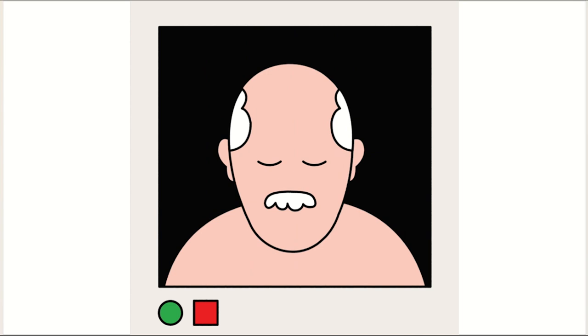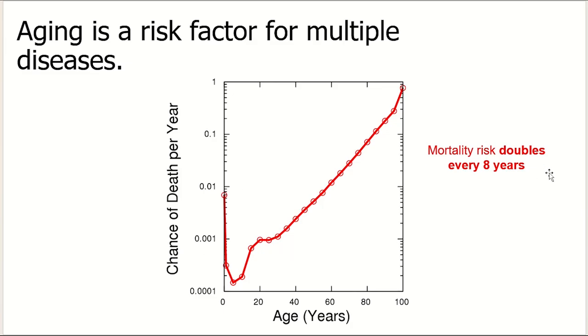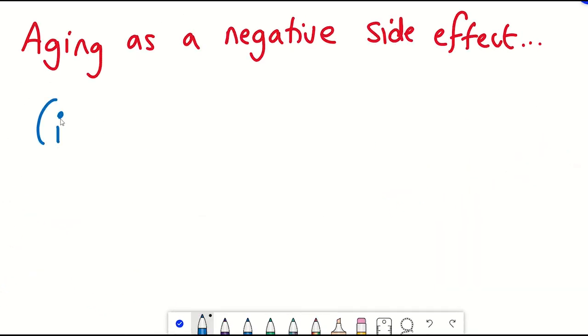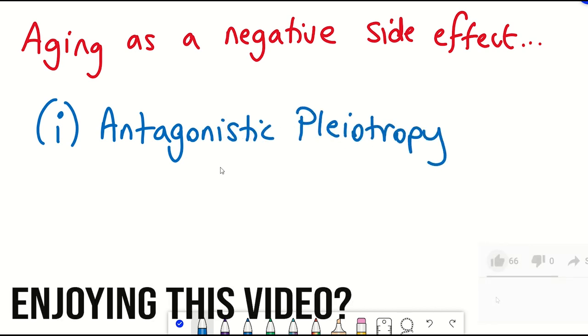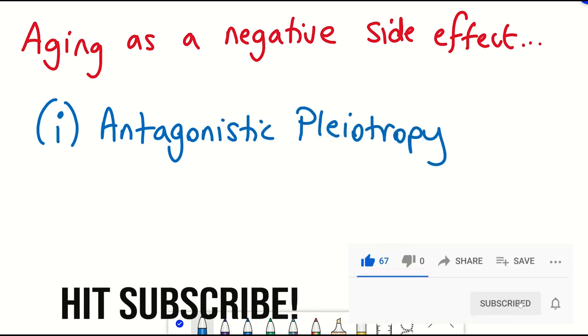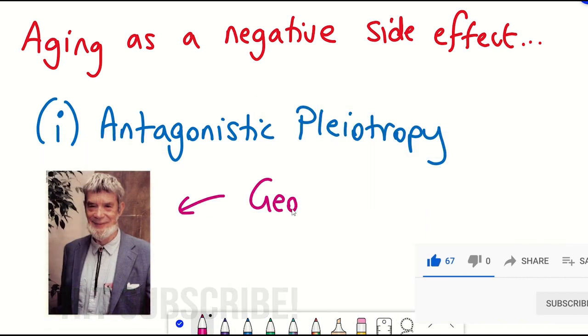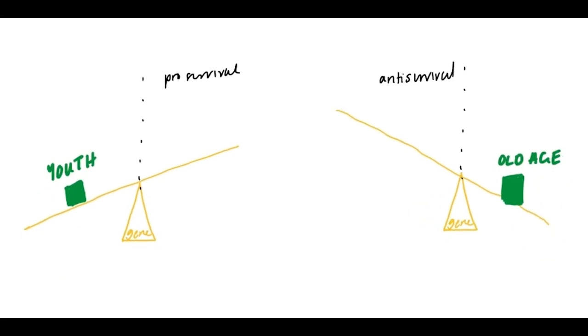Now, aging is deemed bad as it increases our likelihood of death. And this is reflected in many historical theories of aging. One theory that is still very popular is called antagonistic pleiotropy, a concept proposed by the renowned evolutionary biologist George Williams. According to Williams, this theory suggests that certain genetic traits that have beneficial effects early in life may also have detrimental effects later in life.